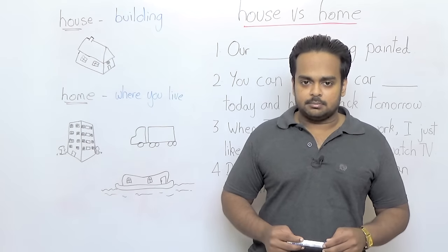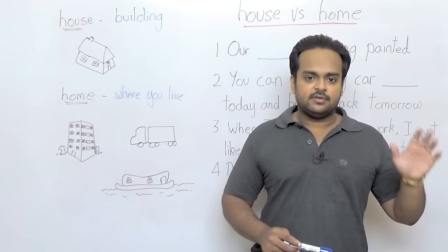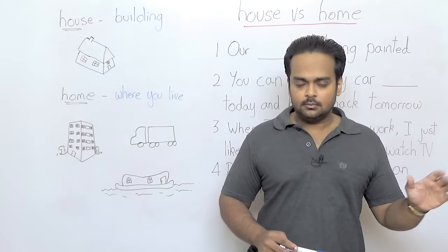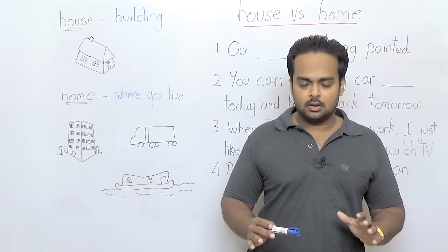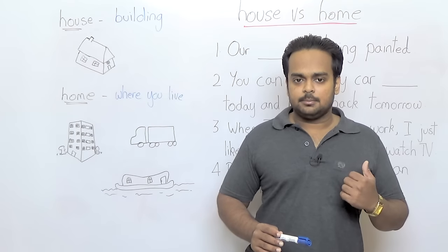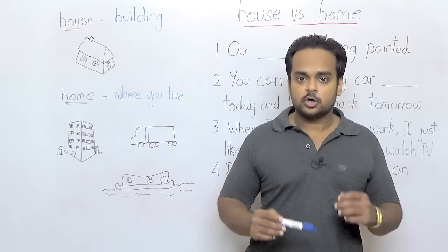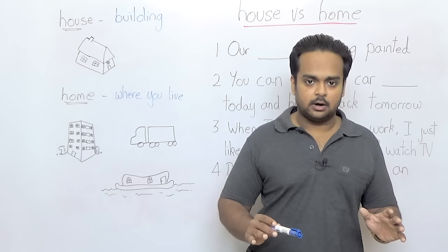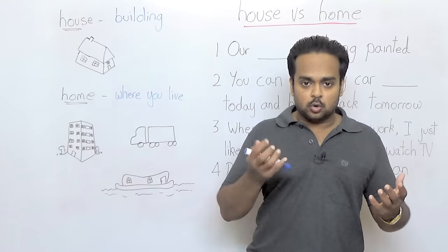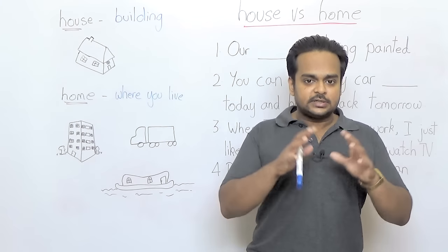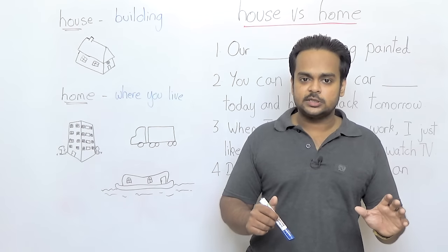Let me give you some examples. When we say they live in a big house, we are talking about the size of the house. Or if we say the house is on fifth street, then we're talking about the location of the house. In both of those sentences, size and location are physical aspects of the building. That's why we're using the word house.